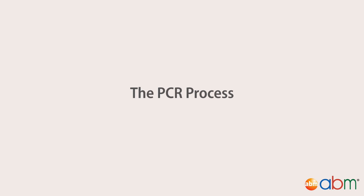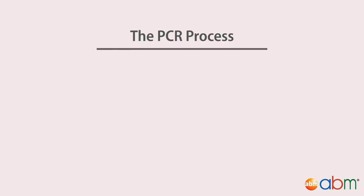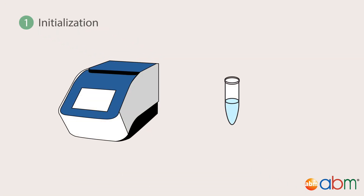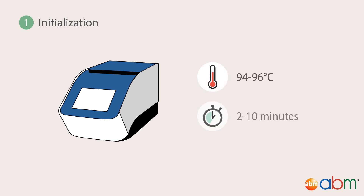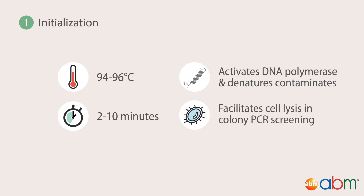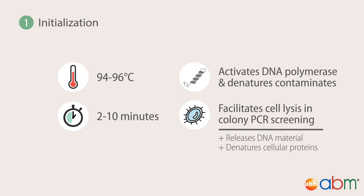The PCR process is separated into four steps: initialization, denaturation, annealing, and elongation. In the first initialization step, the reaction is heated to 94 to 96 degrees Celsius for 2 to 10 minutes to activate the DNA polymerase and to denature other contaminants in the mixture. In the case of colony PCR screening, the step also facilitates cell lysis to release DNA and denature other cellular proteins.